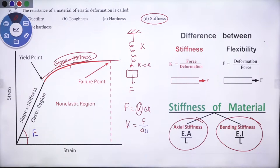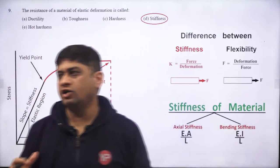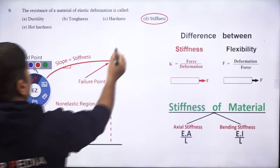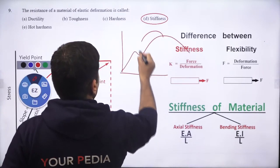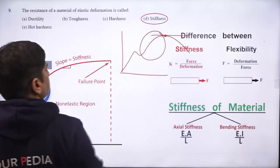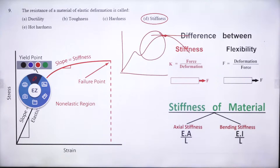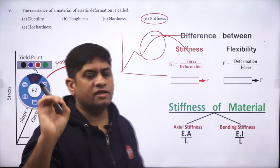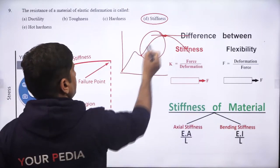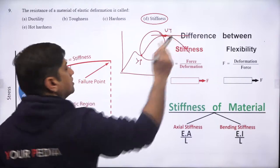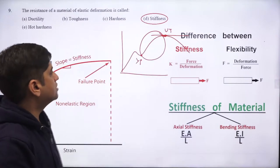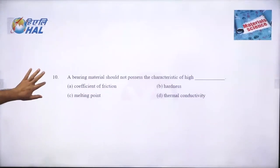In the strain hardening region, strength increases from yield strength to ultimate strength, but the slope of the stress-strain curve is continuously decreasing — so stiffness is decreasing during strain hardening. In the flat region (perfectly plastic), slope is zero, so stiffness is zero at that point. Question: what is happening to the stiffness of the material during strain hardening? Find the answer for the next class.